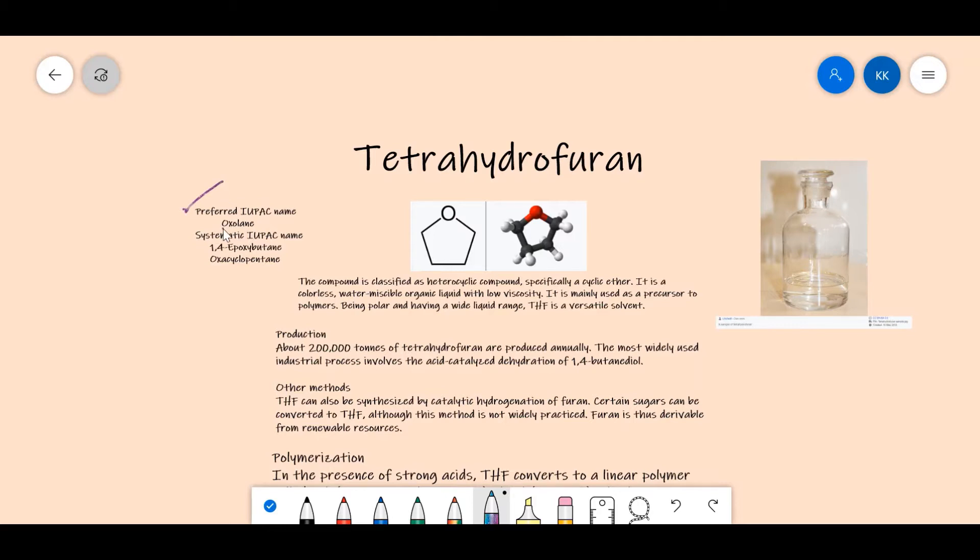The preferred IUPAC name for tetrahydrofuran is oxolane, and the systematic IUPAC names which come according to the rules prescribed by IUPAC are 1,4-epoxybutane and oxacyclopentane.